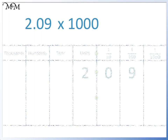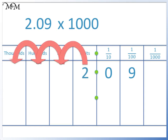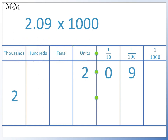Question 4: 2.09 times 1000. We move the 2 three places to the left. The next two digits will then follow. There is a space in the units column, so we write in a 0. 2.09 times 1000 equals 2090.